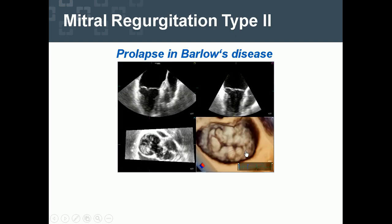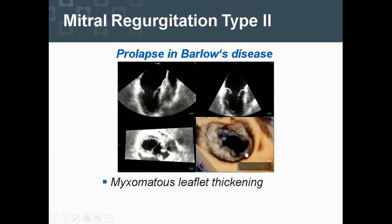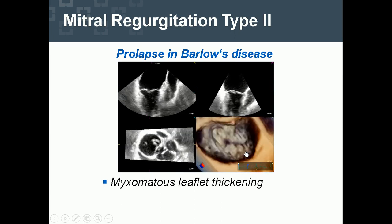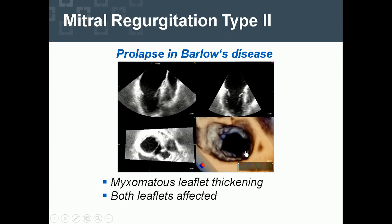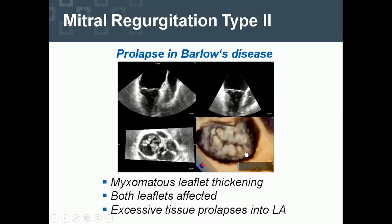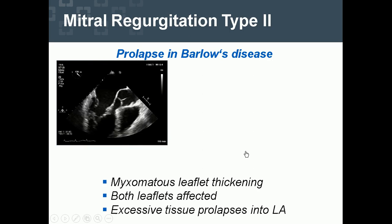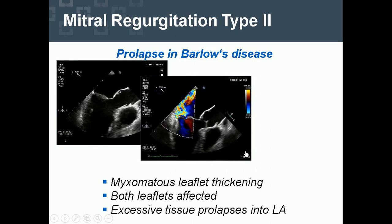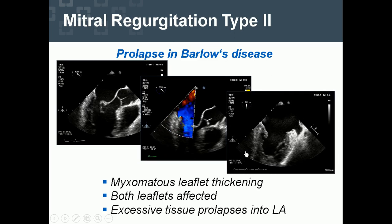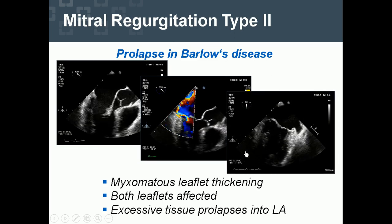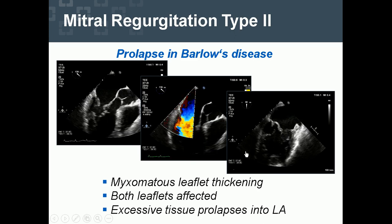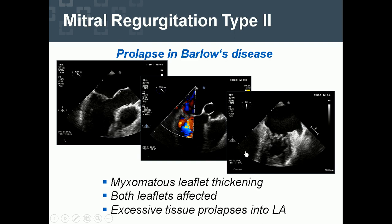Mitral regurgitation in Barlow's disease is due to myxomatous degeneration of the leaflets, nicely shown by leaflet thickening. Both leaflets are usually affected, and excessive tissue prolapses into the left atrium. On 2D echo, more than one segment is involved and we have eccentric jets. The thickening of segments such as A2 and P3 can be clearly discerned.